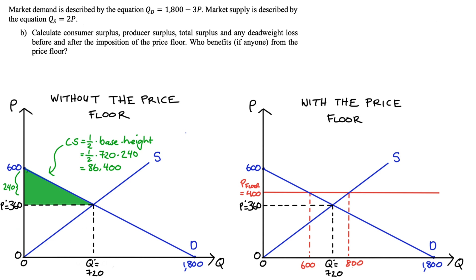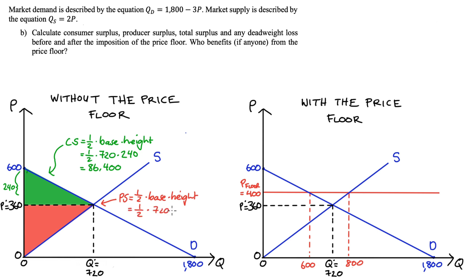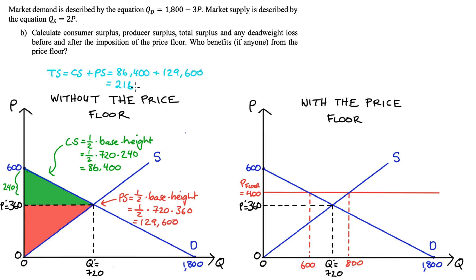Producer surplus is the area above the supply curve and below the price over all units supplied. With price 360 and 720 units supplied: PS = ½ × 720 × 360 = 129,600. Total surplus is CS + PS = 86,400 + 129,600 = 216,000. There is no deadweight loss in this competitive equilibrium, assuming no externalities.